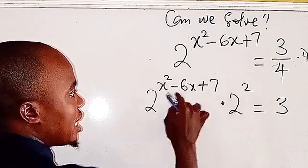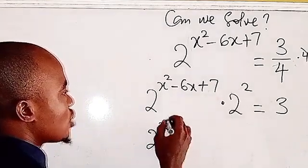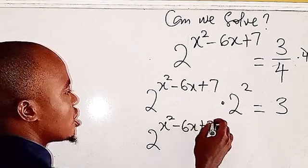We now have two to the power of (2s squared minus six s plus seven plus two) equals three. Adding the exponents gives us two to the power of (2s squared minus six s plus nine) equals three.